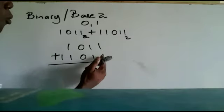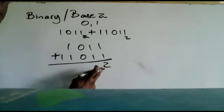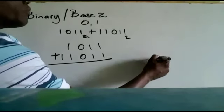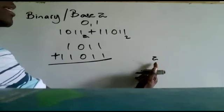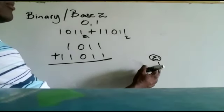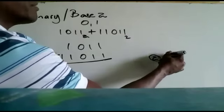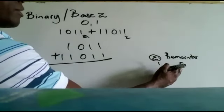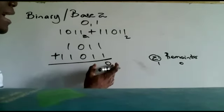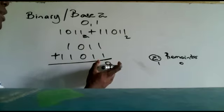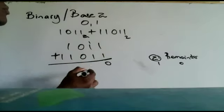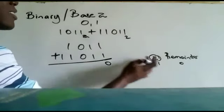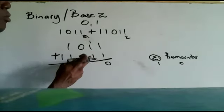For example: 1 plus 1 is 2. We cannot write 2 in base 2 — the biggest digit we can write is 1. So: how many sets of two can we get out of 2? One set of two. What's the remainder? Zero. So we write 0 in that column and carry 1 — one set of two — to the next column to the left.